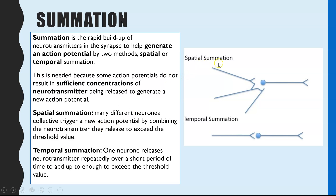Spatial summation is when you have multiple pre-synaptic neurons attaching to one synapse and one post-synaptic neuron. Because you have multiple pre-synaptic neurons, you have multiple quantities of neurotransmitter being released, and you'll be able to cause more sodium ion channels to open.